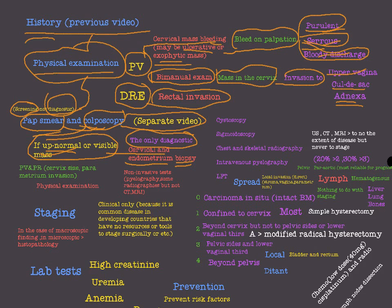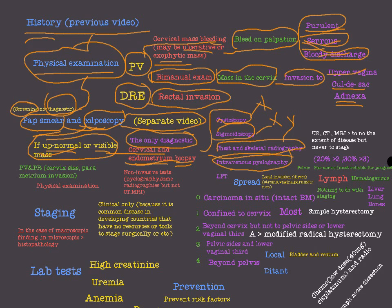After cervical and endometrial biopsy, we move to cystoscopy, sigmoidoscopy, and chest and skeletal radiography. These tests are done to know if there is any metastasis and invasion — cystoscopy for bladder invasion, sigmoidoscopy for rectal invasion, and chest and skeletal radiography for distant metastasis to the lung. Intravenous pyelography and liver function tests are also done because the liver is a susceptible site for metastasis. We can also do ultrasound, CT scan, and MRI to know the extent of disease.